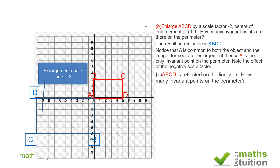For the third question, ABCD is reflected on the line y = x. How many invariant points are on the perimeter? The line y = x is shown, and after reflection the rectangle becomes its image. For this reflection on the line y = x, only point A retains its original coordinate value.